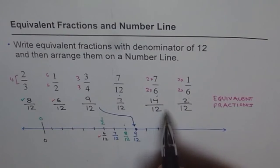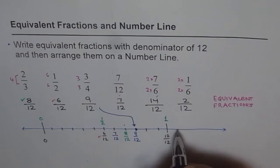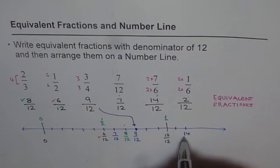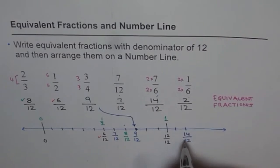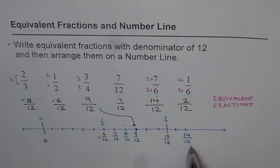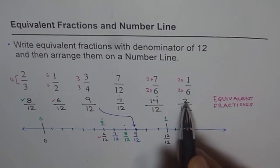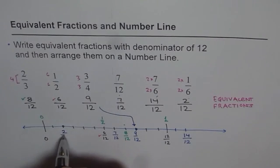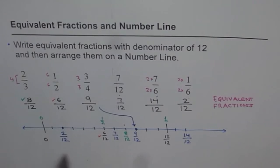Now 14/12: since 12/12 is already at 1 whole, we have to go further along. Counting 13 and 14, so 14/12 goes here. As you can see, it is an improper fraction — the numerator is greater than the denominator, so it is more than 1. And 2/12 is the least number on the line.